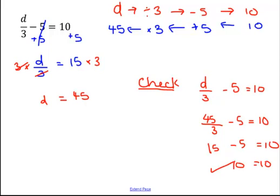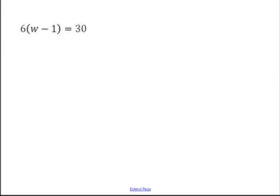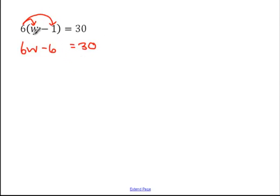One last example — we've got brackets in this case. There are two ways you can go about doing this. The first is you can expand the brackets by multiplying 6 by both terms inside: 6 times w is 6w, and 6 times minus 1 is minus 6, and that's equal to 30. That's maybe the easiest way to deal with equations with brackets. So we've got 6w minus 6 equals 30. The first thing we want to deal with is this minus 6, so the opposite is to add 6 to both sides.